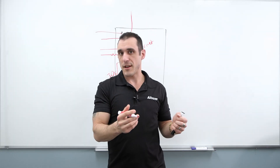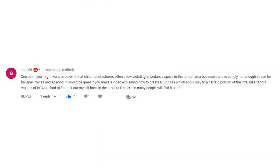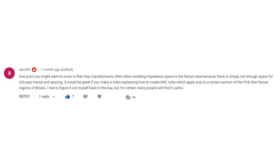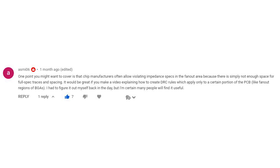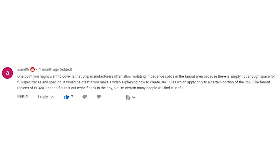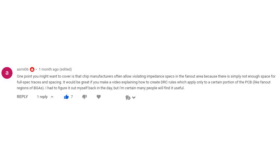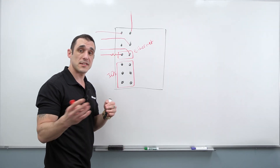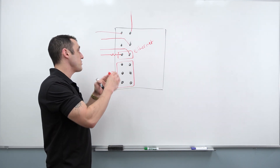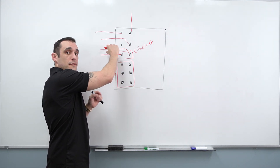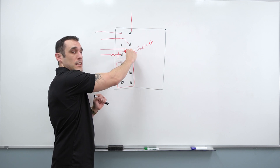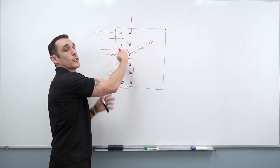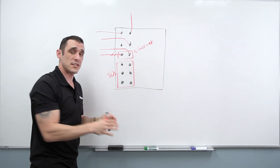There's another question that asks about the impedance — let's look at that now. Asme06 writes: one point you might want to cover is that chip manufacturers often allow violating impedance specs in the fan out area because there is simply not enough space for full spec traces and spacing. So that is an excellent point. You are exactly right. Sometimes you can't fit the full width of the trace into this footprint and actually route through these two balls and then make this connection that you might need to make for, in this example, ethernet.